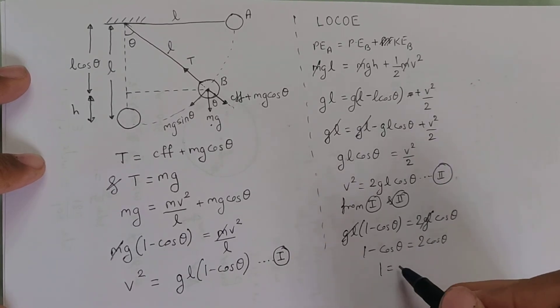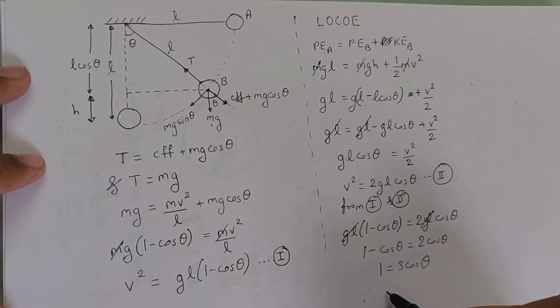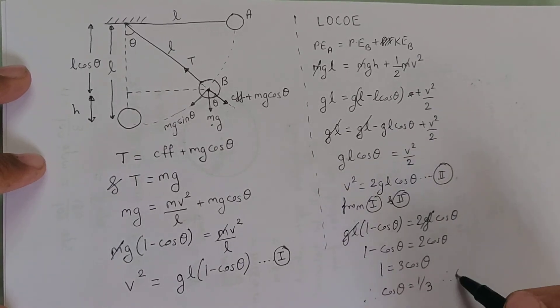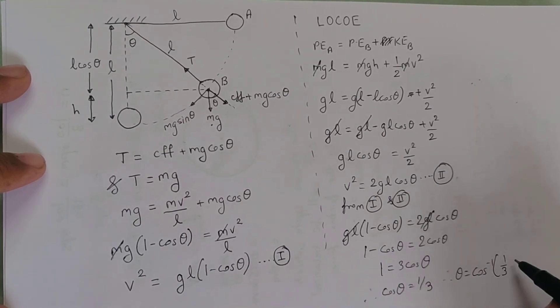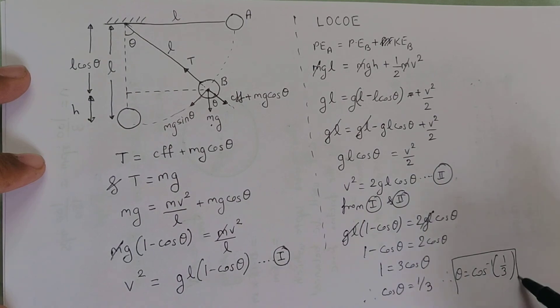That gives me 1 as 3 cos theta. Therefore cos theta is 1 by 3. So theta is cos inverse of 1 by 3, which is the final answer.